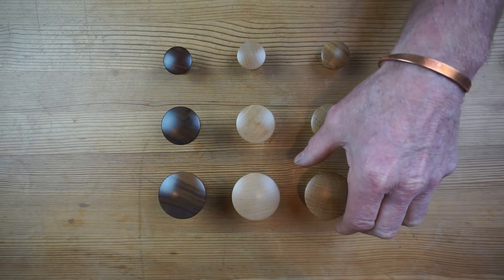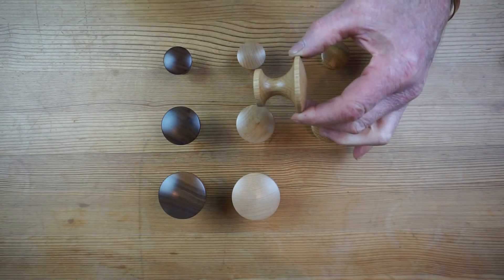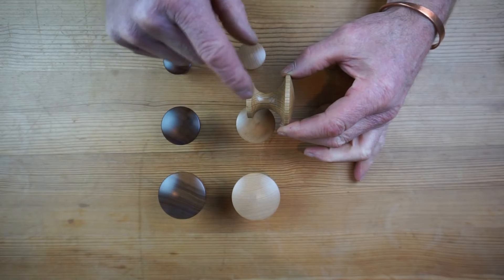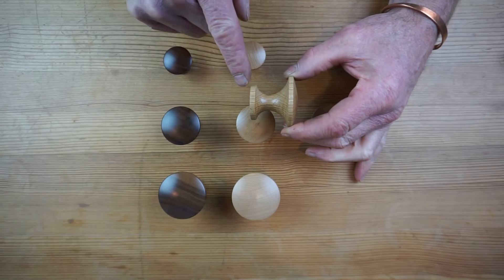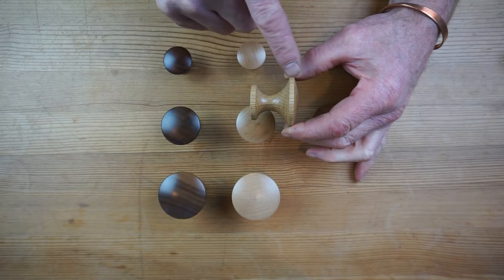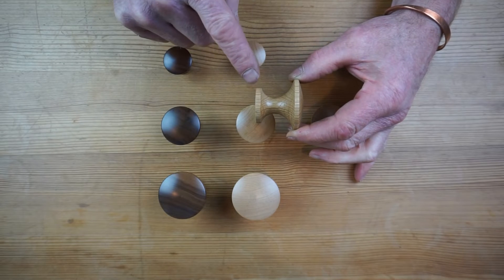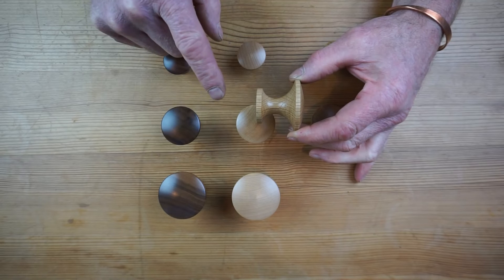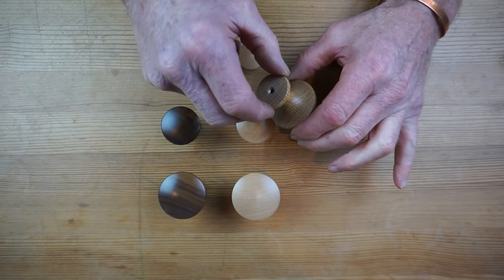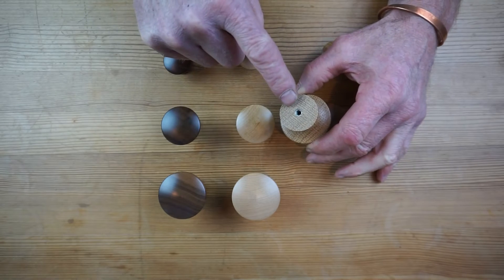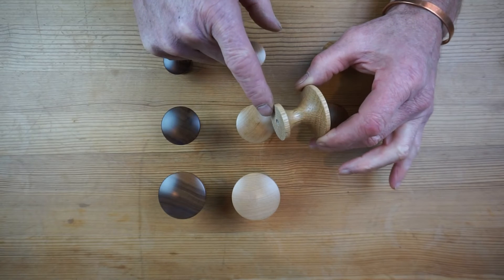As you can see, this is 42 mil deep on the 48 mil knob. All the dimensions are on the website. All our cabinet knobs come with an insert to accept a 30 mil screw, which we supply with every knob.